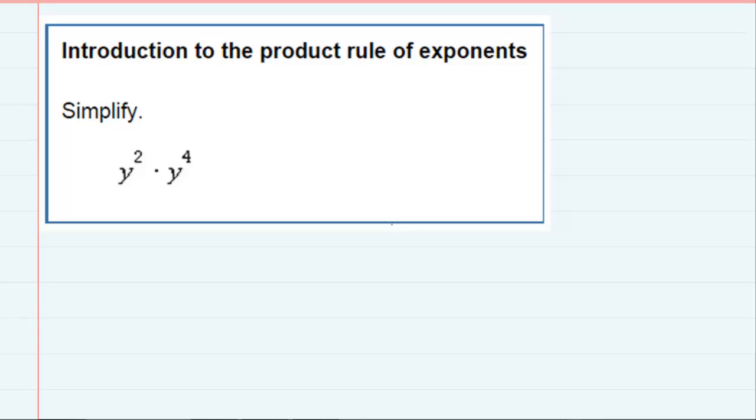Introduction to the product rule of exponents. The product rule states that if I have two variables being multiplied and they're raised to powers, then I can combine that and keep the base, which is x, and add the exponents.